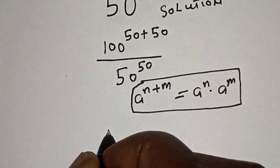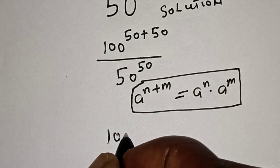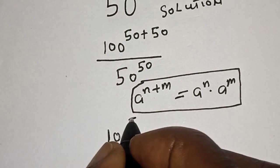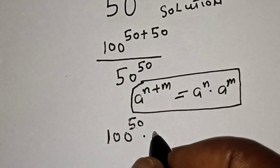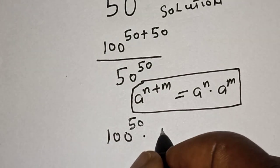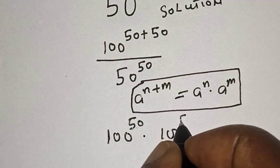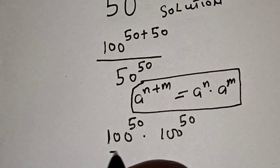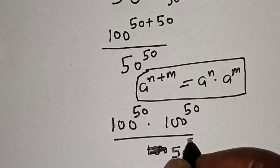Then, this is 100 to the power of 50 multiplied by 100 to the power of 50, divided by 50 to the power of 50.